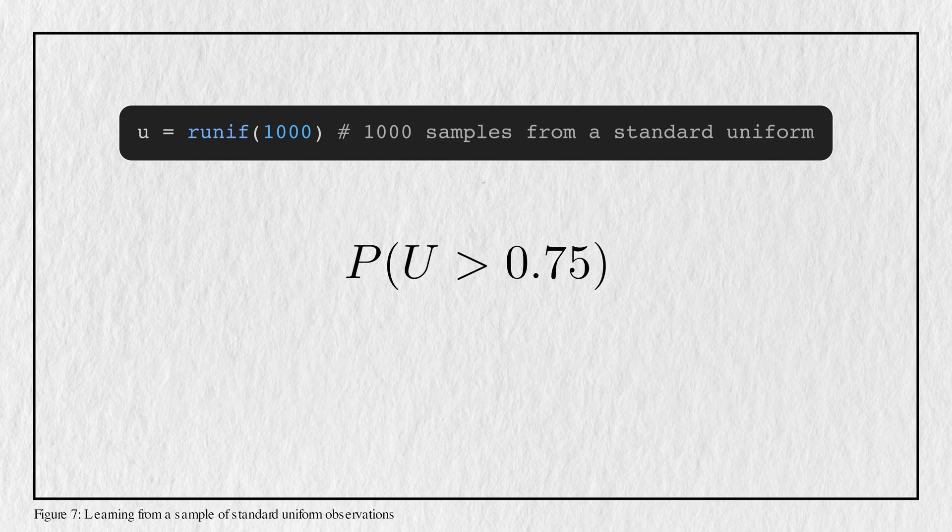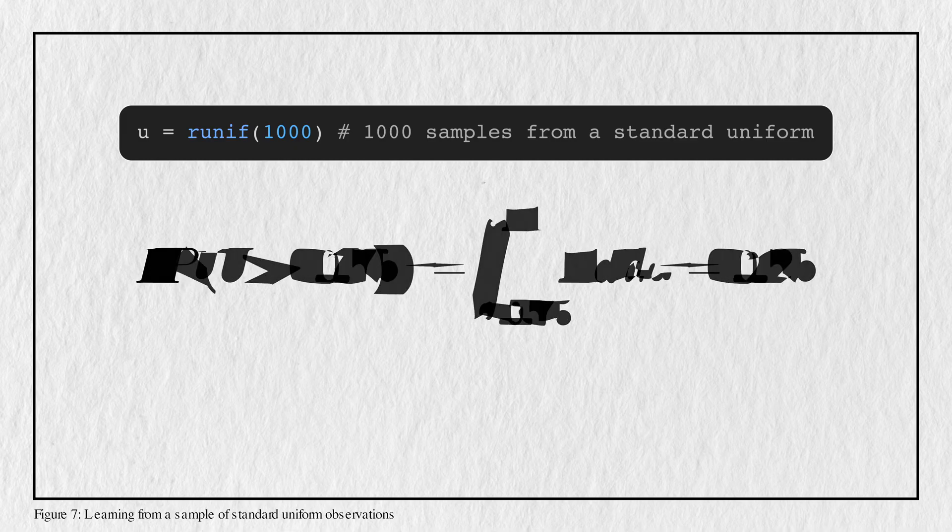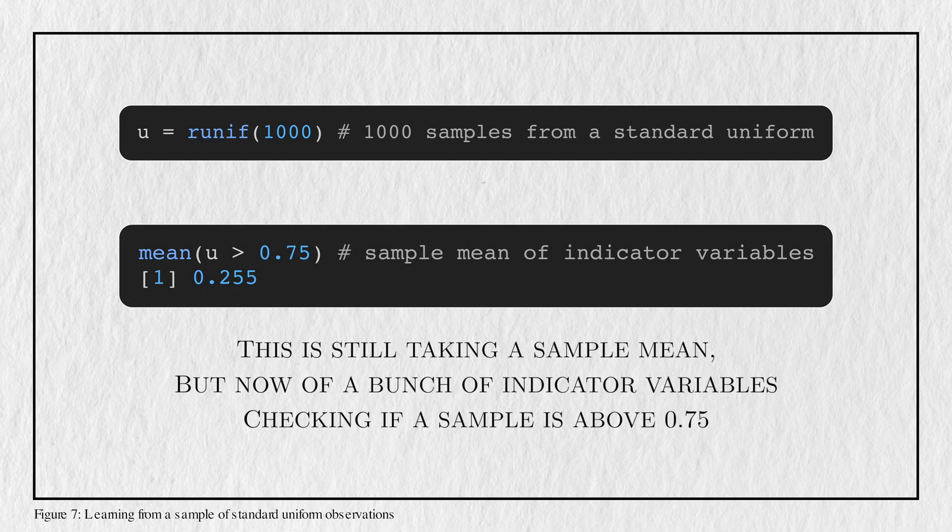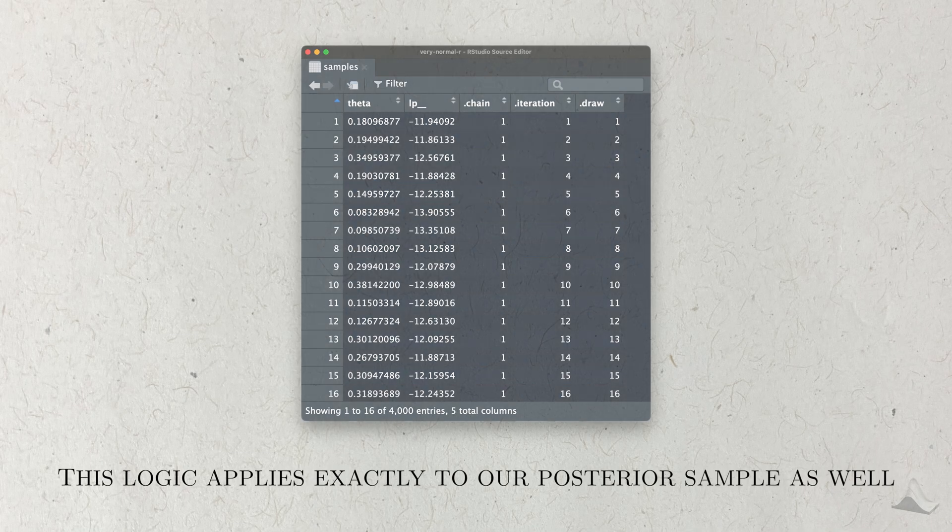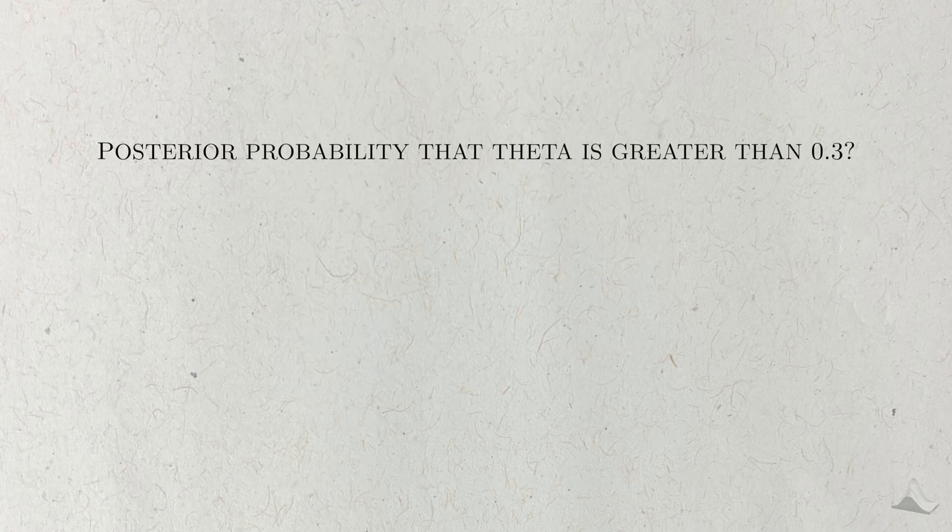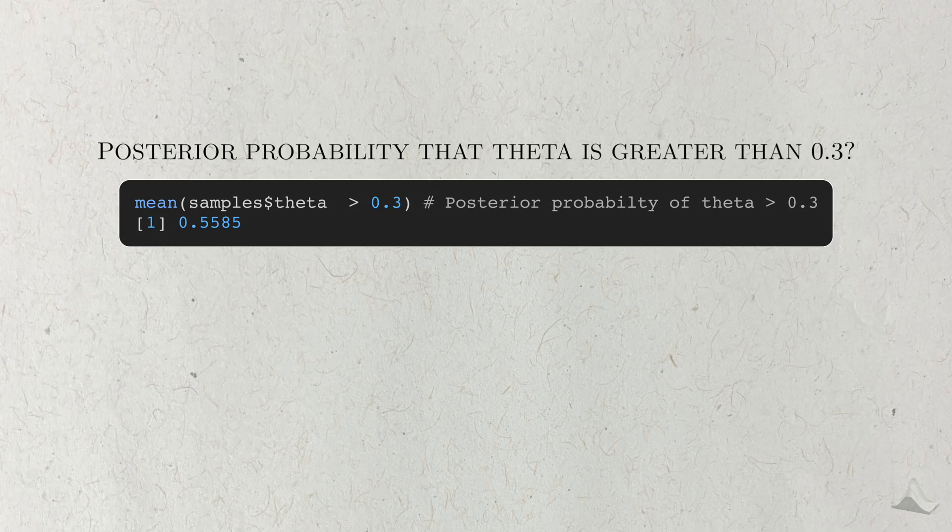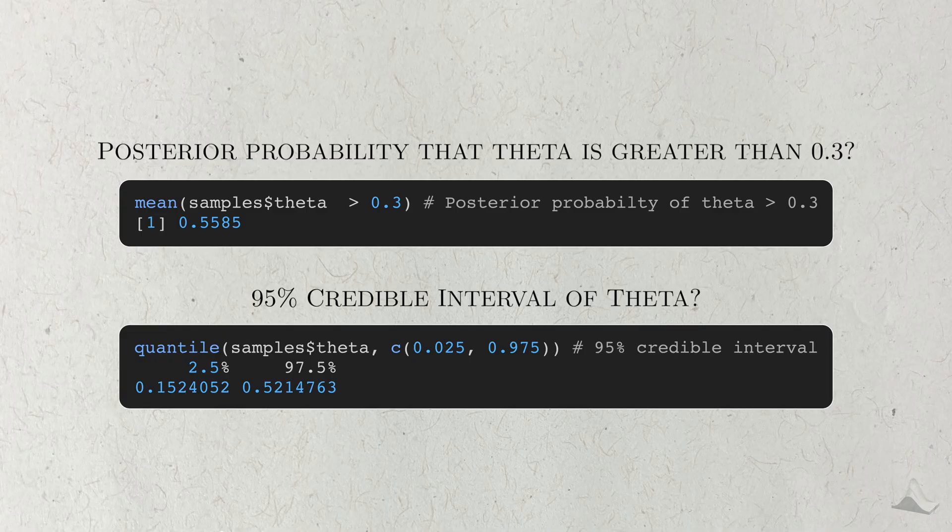Here's a second example. Let's say that I want to calculate the probability that the standard uniform is greater than 0.75. Like before, we can calculate this probability from the general definition of a cumulative probability. With our uniform sample, this is still taking the mean, but we're taking the mean of a bunch of indicator variables that take the value 1 if the number is greater than 0.75 and 0 otherwise. Again, the law of large numbers tells us that we just need to generate a large enough number of samples to get a really good approximation of the true probability. The logic behind these calculations exactly applies to our posterior sample as well. Want to know what the posterior probability that theta is greater than 0.3? Just calculate the proportion. Want to know the 95% credible interval? Just get the 2.5 and 97.5 quantiles from the sample.